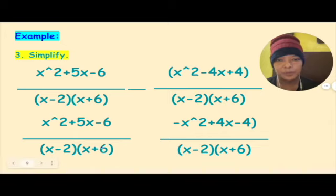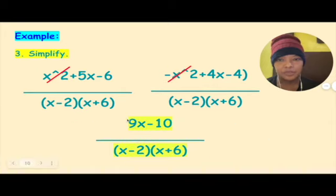Then proceed, you perform your operation. You copy the ilalim, yun yung LCD nya na. Then you combine like terms. x squared minus x squared, cancel po yan. 5x, 4x. That is 9x, negative 6, negative 4. Negative 10. This is your final answer.